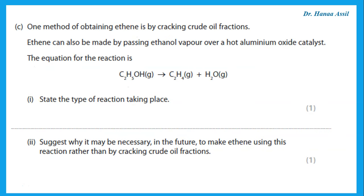One method of obtaining ethene is cracking crude oil fractions. Ethene can also be made by passing ethanol over a hot aluminum oxide catalyst, and the equation shows this forms ethene plus water. What type of reaction is this? We are heating it and breaking it up, so this is decomposition. Also, when we remove water from a compound, this is called dehydration. So this reaction can be referred to as thermal decomposition or dehydration.